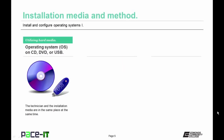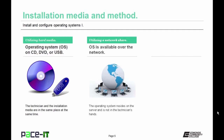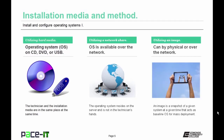Another type of media is the network share, where the operating system is available over the network and the media is not in the technician's hands. Finally, you can use an image — the image can be on physical media or over the network. A base or preferred operating system has been created and stored in a file. This is best for mass deployment.